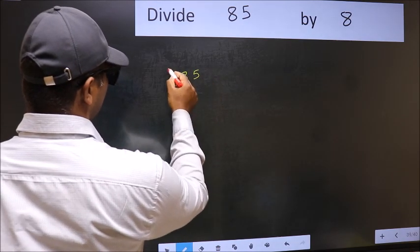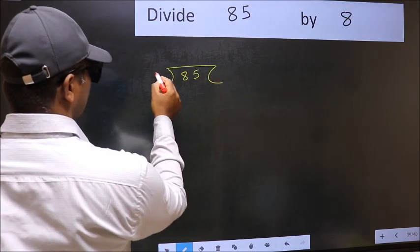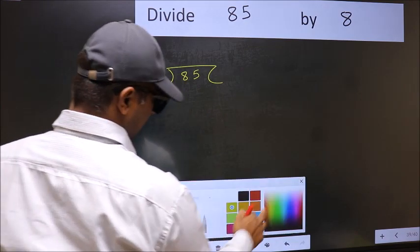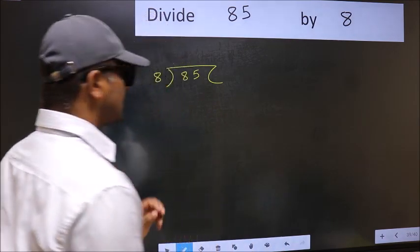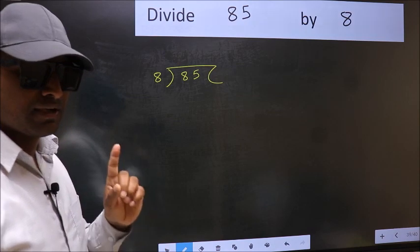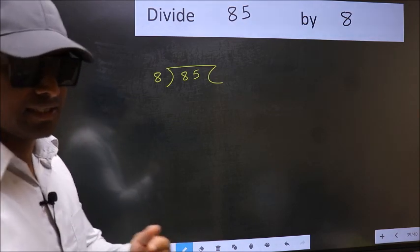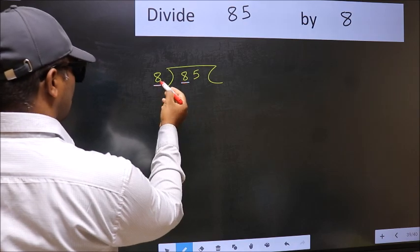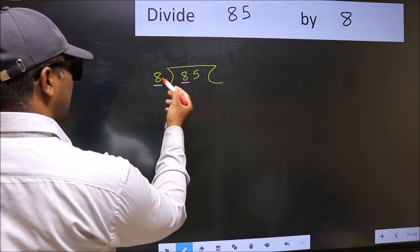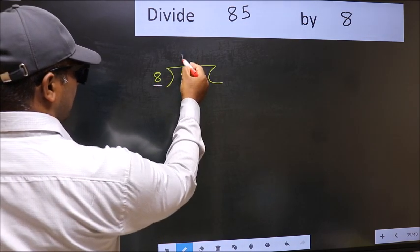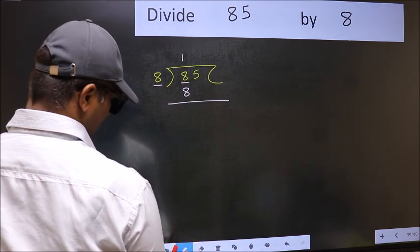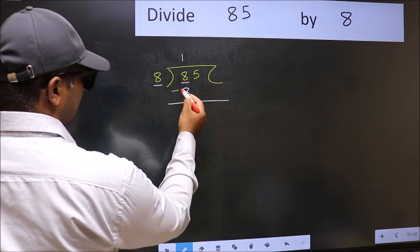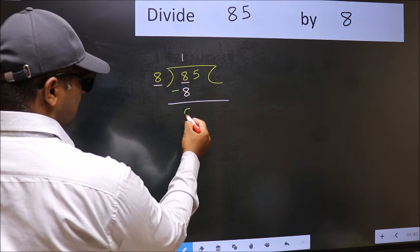85 and 8 here. This is your step 1. Next, here we have 8 and here also 8. When do we get 8 in 8 table? 8 once, 8. Now you should subtract. 8 minus 8, 0.